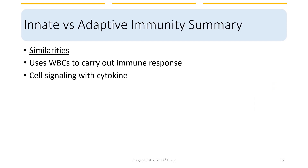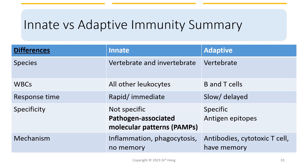To summarize the similarities and differences of innate and adaptive immunity: both branches use white blood cells to carry immune system responses, and both use cytokines for cell signaling. Their differences are much more numerous, and here is a summary table. You don't need to specifically memorize this table because it is only a summary of everything we've just talked about in the last 30 minutes. That is the end of the first lecture. I hope to see you in the next one. Bye.